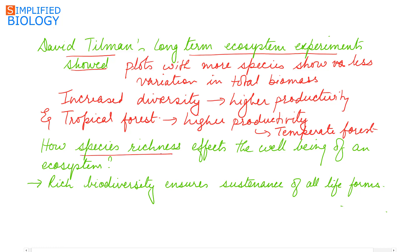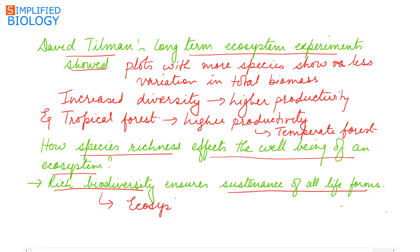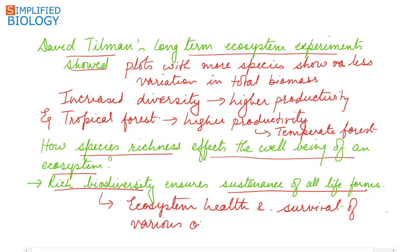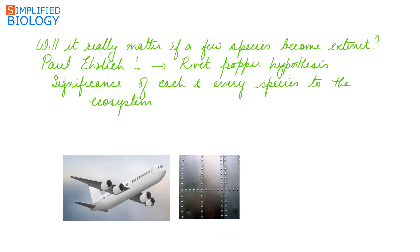How species richness affects the well-being of an ecosystem is not yet completely understood, but it is known that rich biodiversity ensures the sustenance of all life forms. Rich biodiversity is essential for ecosystem health and also for the survival of various organisms, including the human race on this planet.